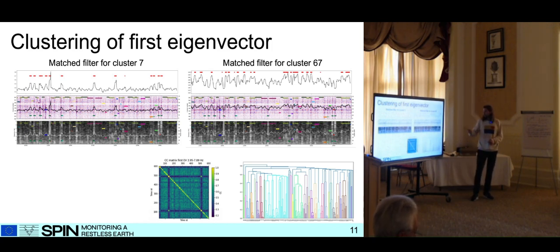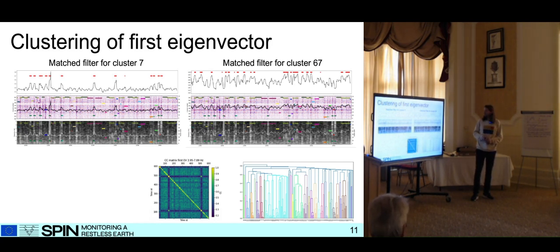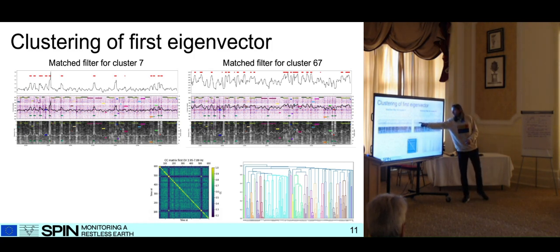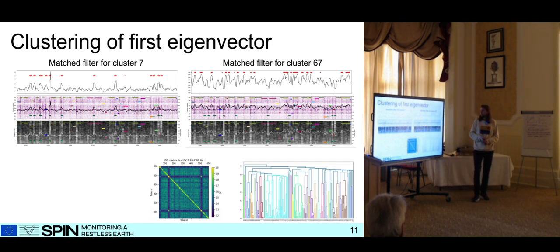What we can also do with a cluster like this is take a medoid and use it as a template to search our data space for events. This trace shows when we have a detection and when we don't. When we do this for different clusters with different events, we get different results — they don't detect the same thing.